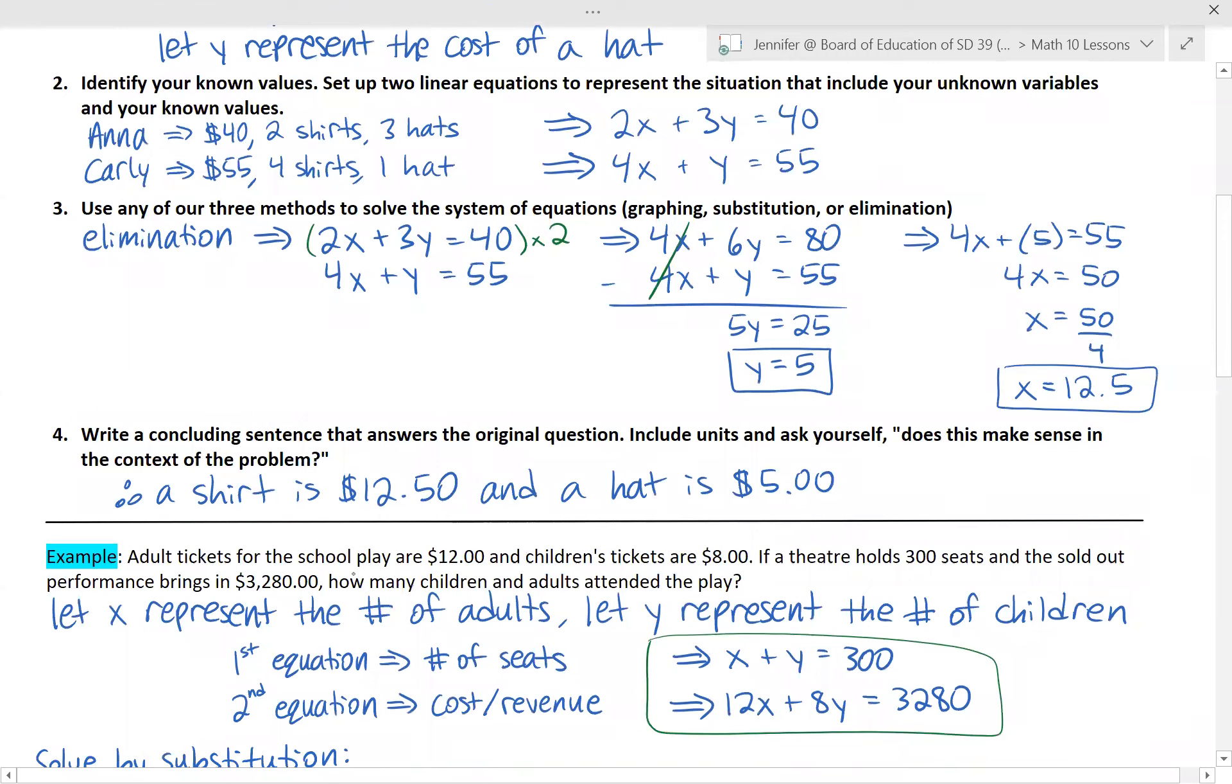In this one adult tickets for the school play are $12 and children's tickets are $8. If a theater holds 300 seats and the sold out performance brings in $3,280 how many children and adults attended the play? So our first step is to look at what are our unknown values and write let statements to assign variables to these unknowns. So when you're looking for this information it makes sense to look where is the question mark and where is the question in this problem. It's asking how many children and adults attended the play. Those are our two unknowns.